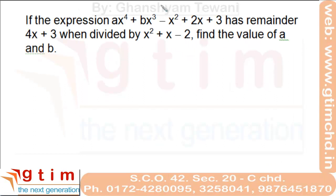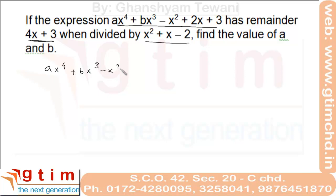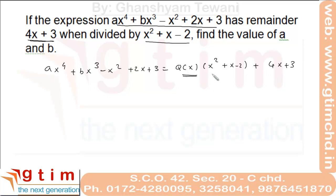Solve this equation. Here we have a degree-4 expression divided by a quadratic, and we are given that the remainder is linear. So we write the expression as q(x) times the divisor x squared plus x minus 2, plus the remainder 4x plus 3. To get the values of a and b, we require two equations in a and b.